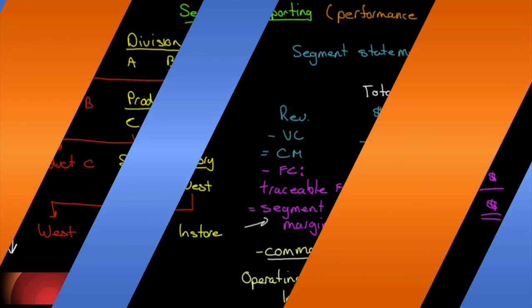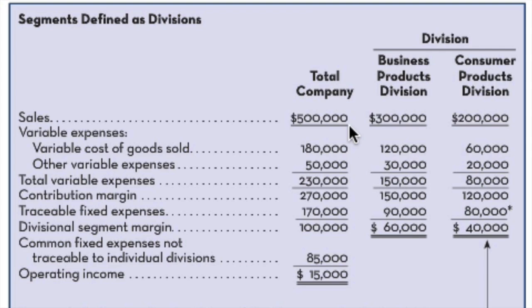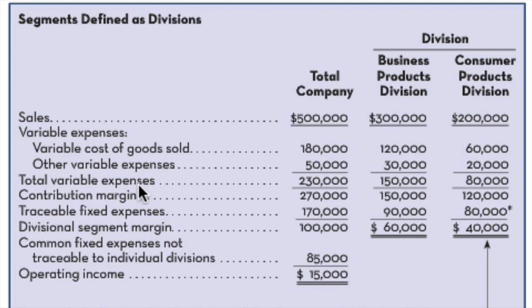Let's have a look at what that actually looks like with some numbers. On the screen here I have a segmented contribution format income statement. We can see our total company column, and the two segments: the business products division and consumer products division. We have sales of $500,000 broken down into $300,000 and $200,000 — the individual sales numbers from each division add up to the total company. We then subtract variable expenses: variable cost of goods sold and other variable expenses, giving total variable expenses of $230,000 — made up of $150,000 for business products and $80,000 for consumer products — arriving at a contribution margin for each division and the company as a whole.